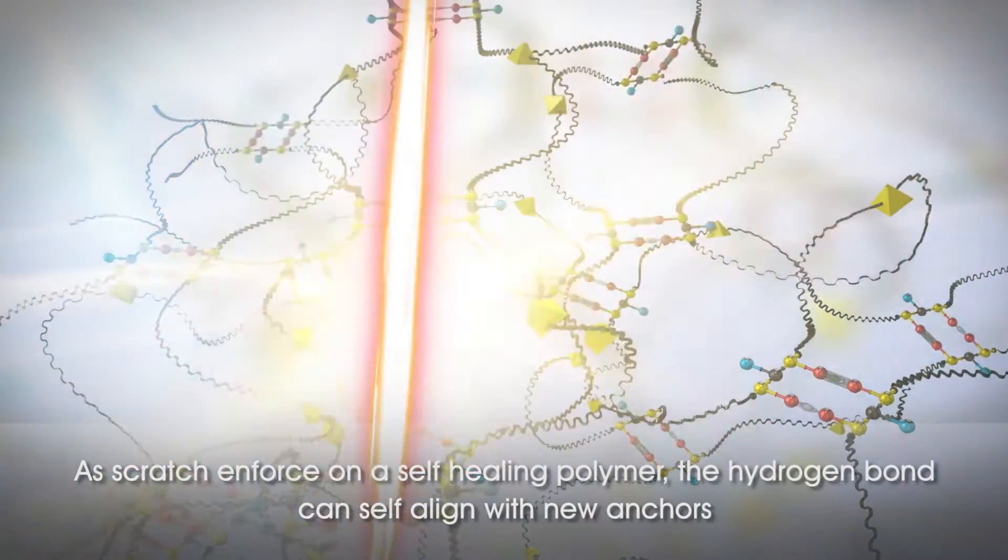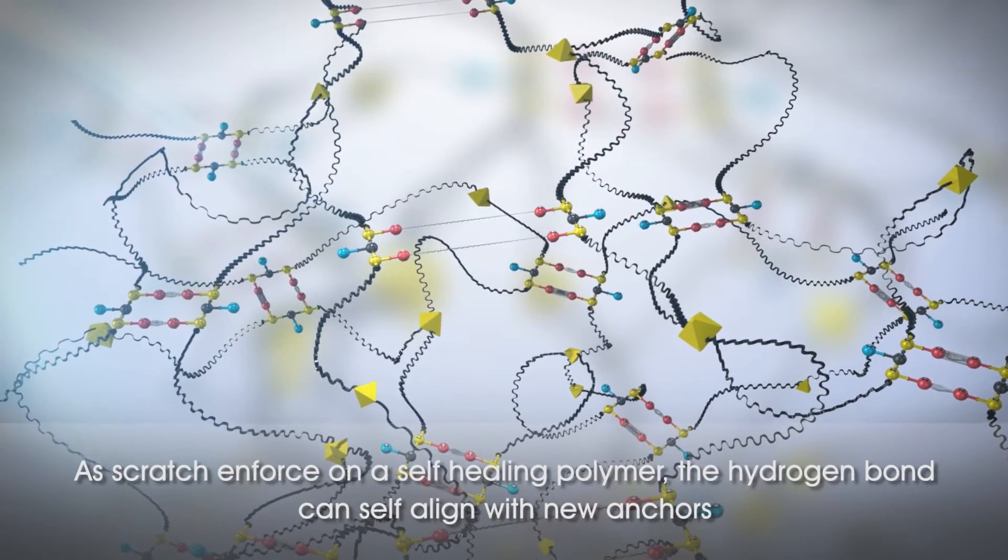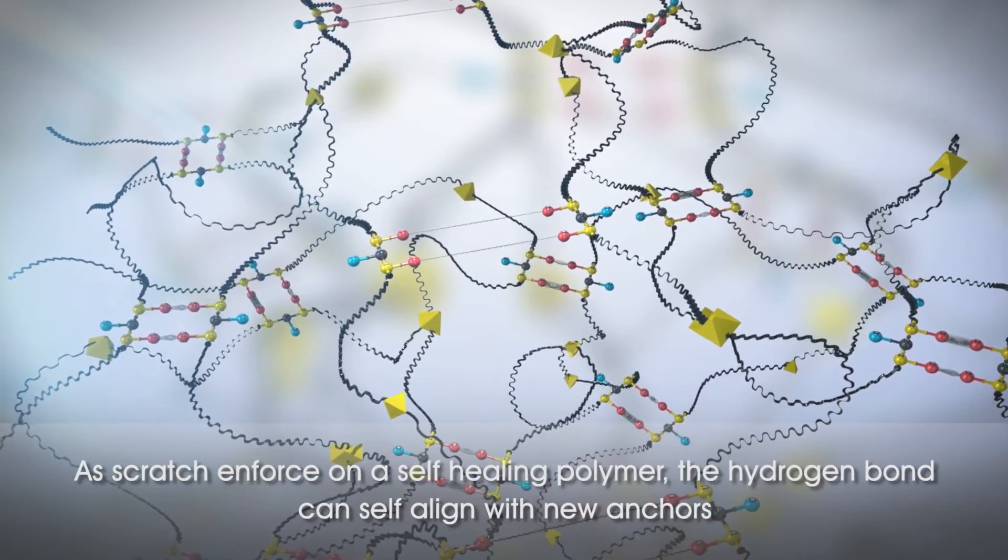When a scratch occurs, the polymer chains are temporarily disconnected and look for new anchors, while the fixed covalent bond remains intact.